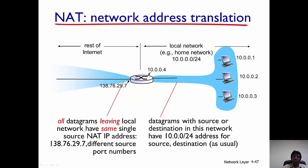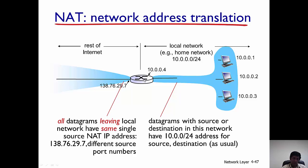Let's look at an example. The local network has an IP address starting with 10.0.0.0 with subnet /24, so all IP addresses start with 10.0.0. The computers have addresses like 10.0.0.1, 10.0.0.2, and so on. The router's internal interface has 10.0.0.4, while the external interface has IP address 138.76.29.7. All datagrams leaving this local network will use that external IP address 138.76.29.7.